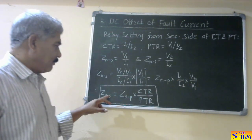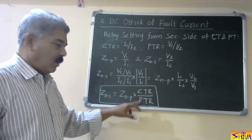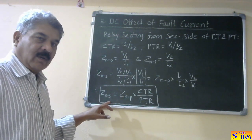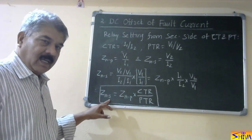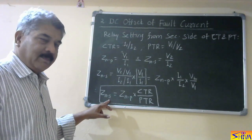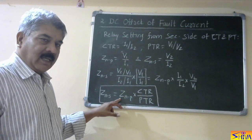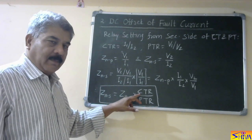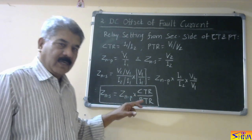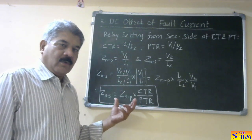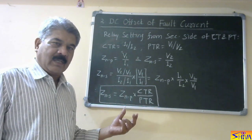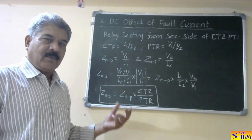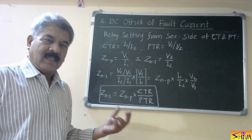So this is nothing but CT ratio upon PT ratio. The impedance setting or reach of the relay from the relay side — that is the secondary side of CT and PT — is equal to the reach from the primary side multiplied by CT ratio upon PT ratio. So whenever CT ratio and PT ratio are given, we compute the setting of the relay from the secondary side, that is relay side.